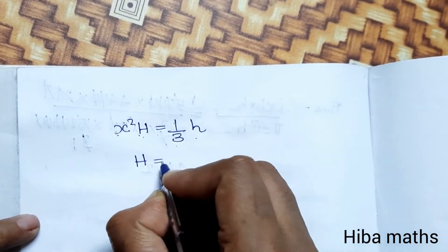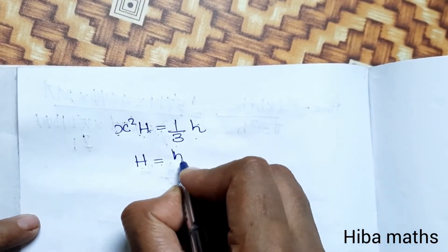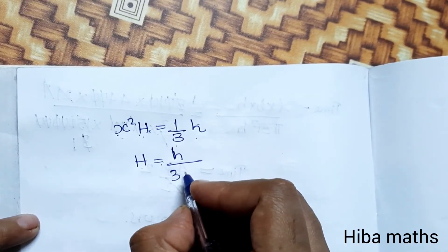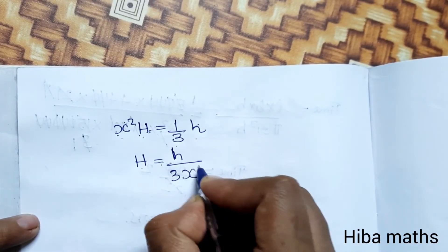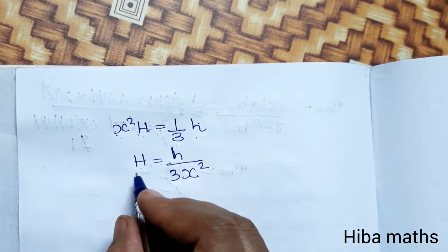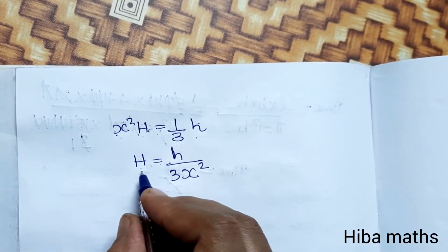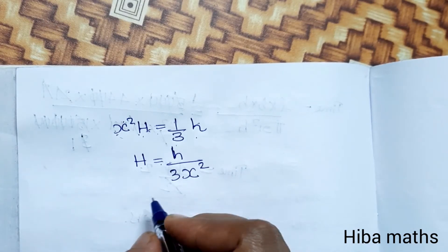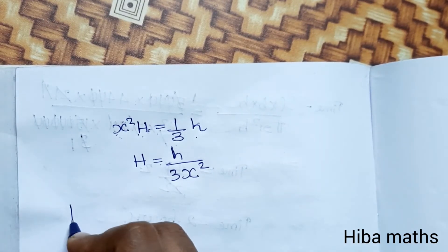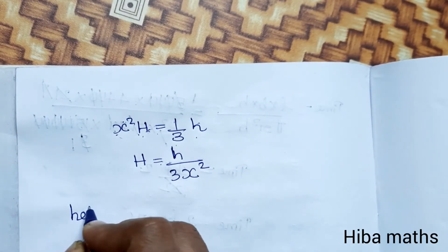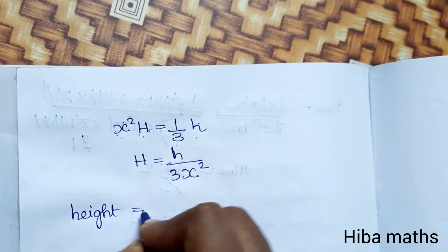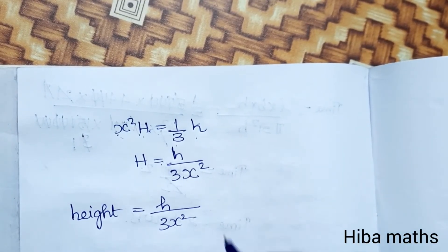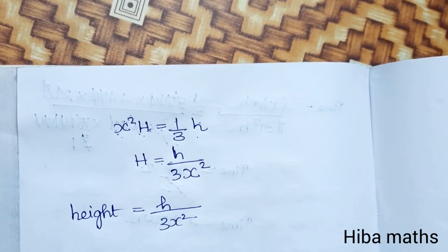So h is equal to H divided by 3 x squared. Therefore, height of the water is small h equal to H by 3 x squared.